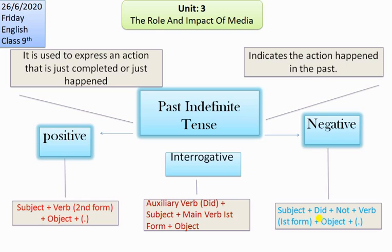In past indefinite tense we have positive sentences, interrogative sentences, and negative sentences. For positive sentences, the rule is: subject plus the second form of the verb plus object. For example, 'I cooked dinner' — here we used 'cooked,' which is the second form of the base verb 'cook.'